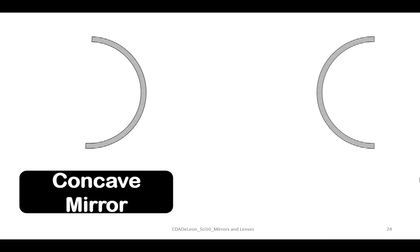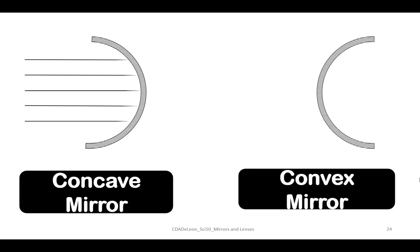In terms of concave mirror, concave mirror has a reflecting surface that caves inward. Concave mirrors converge light to one prime focus point. Therefore, they are also called converging mirrors. They are used to focus light. The image formed by a concave mirror varies in size depending on the position of the object with respect to the mirror.